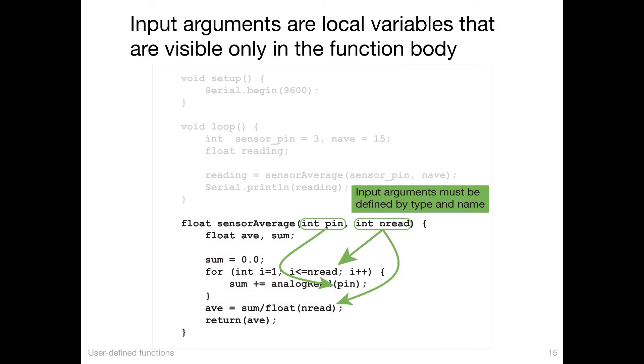Input arguments that are defined in the function definition line, in this case pin and nread, those are the input arguments. Those input arguments are available inside the body of the function. They're declared by type in the function definition line. Int pin is used down inside the analogRead function and int nread is used in the for loop and also at the very end when computing the average. So those input arguments have to be defined by type and name in the function definition statement.